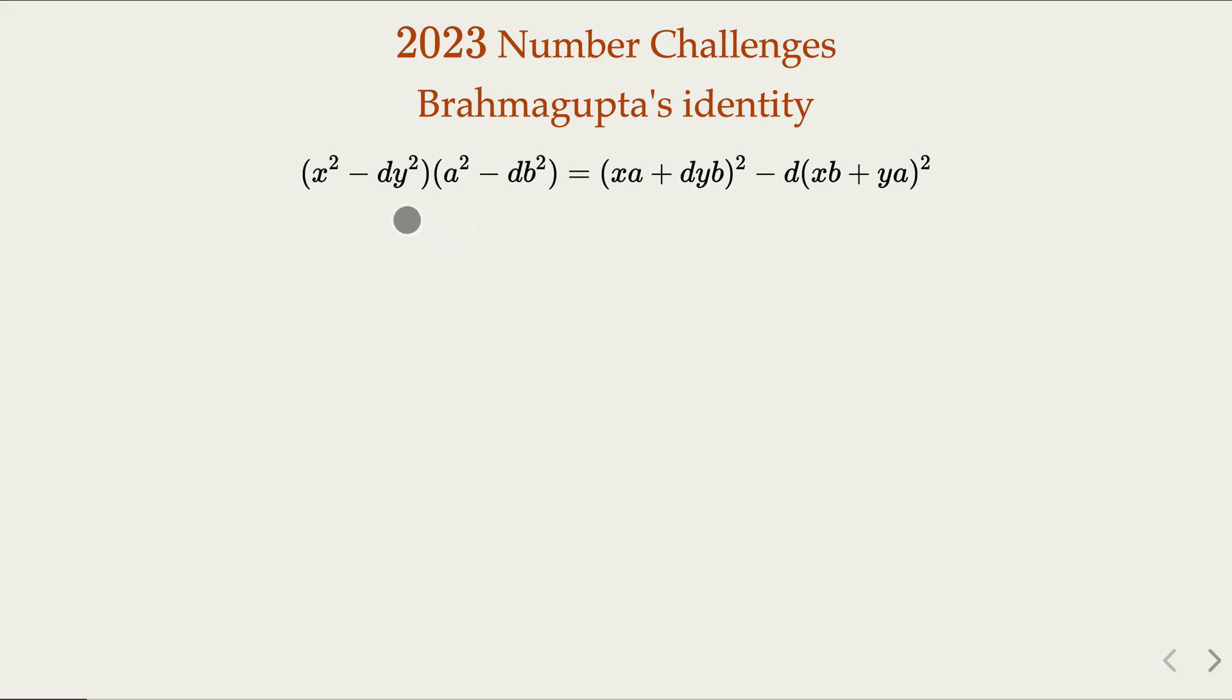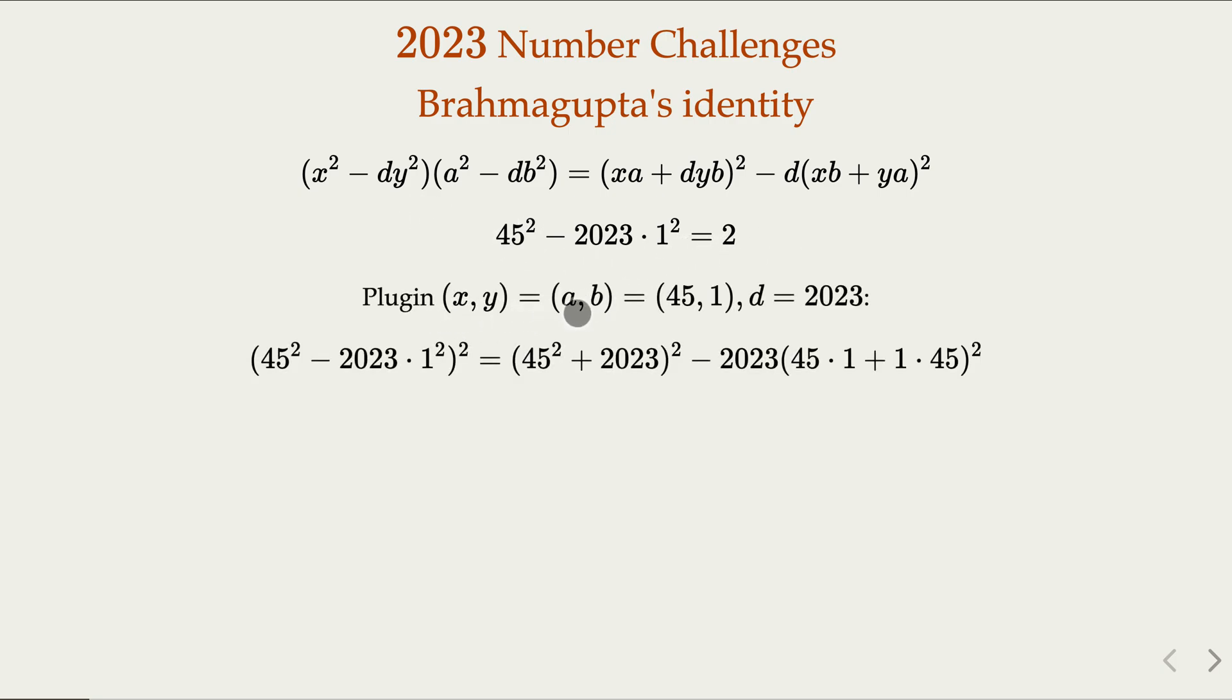This is called an identity. You can just express this and verify the algebra. We're going to try to solve the equation. We notice that when x equals 45, y equals 1, this does not equal 1, but equals 2. We're going to use this identity here. The fact that x equals 45, y equals 1, this expression equals 2. We plug in x, y, and a, b the same as 45 and 1 into this equation, and d is 2023. These two terms are the same because x and y equal a and b.